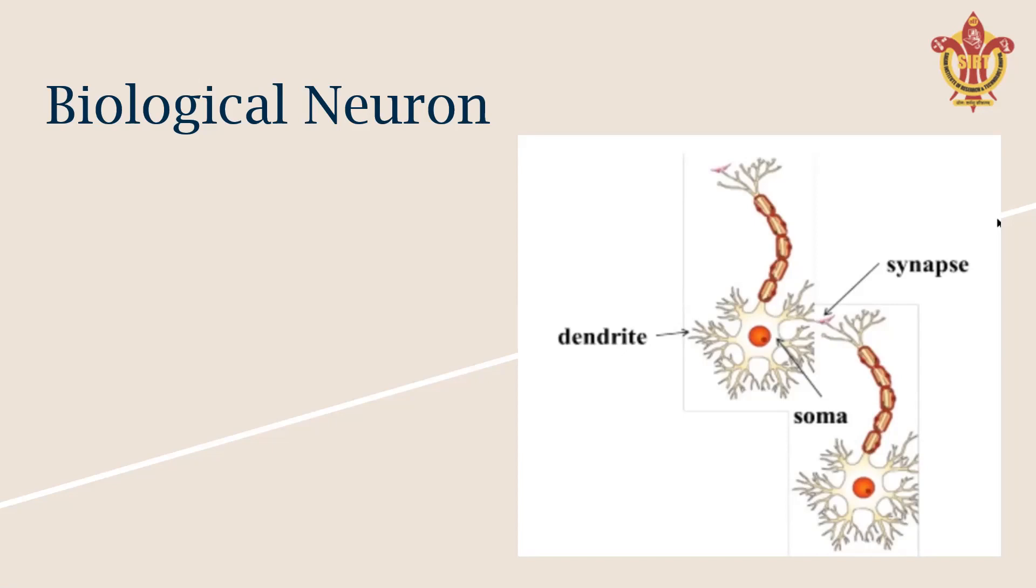The processing of this information happens in soma, which is the neuron cell body. If the neuron does end up firing, the nerve impulse or action potential is conducted down the axon; otherwise, nothing will happen.